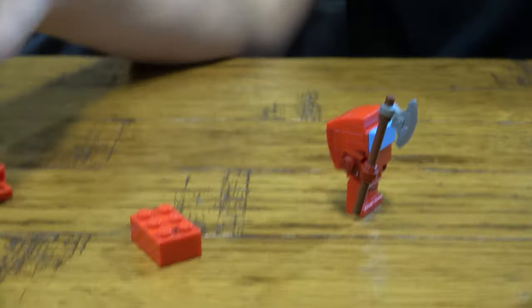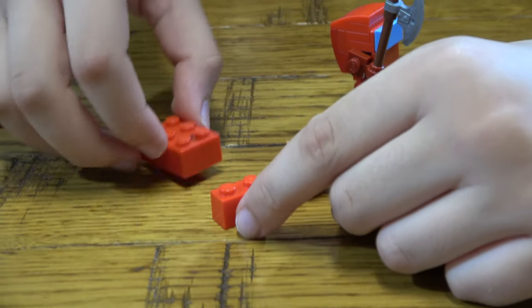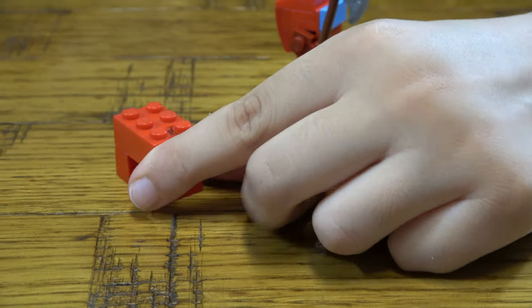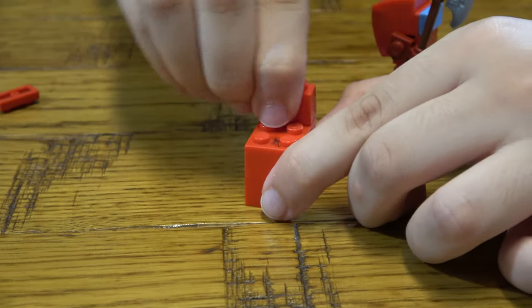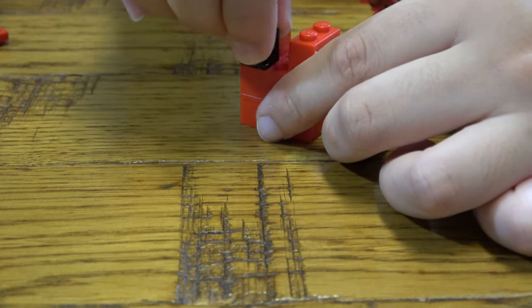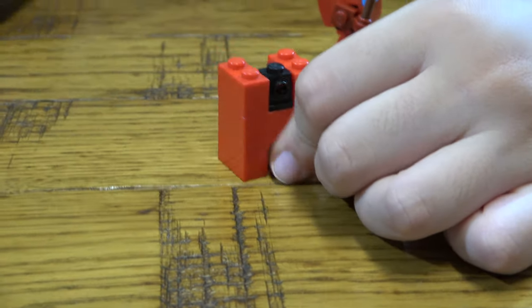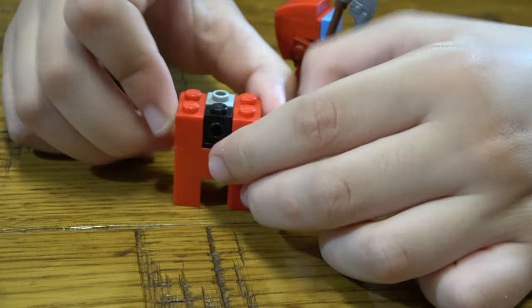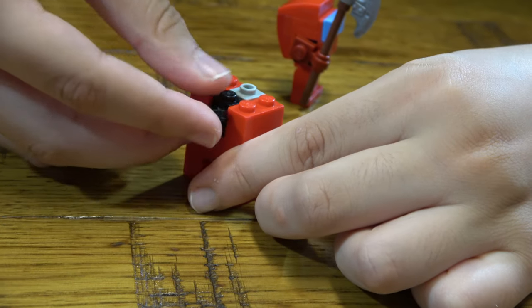And now to build the zombie. We place this here, put this here, we place one here, one here. Place one of these there, then one of these, put it here, put it here, and then we put this.